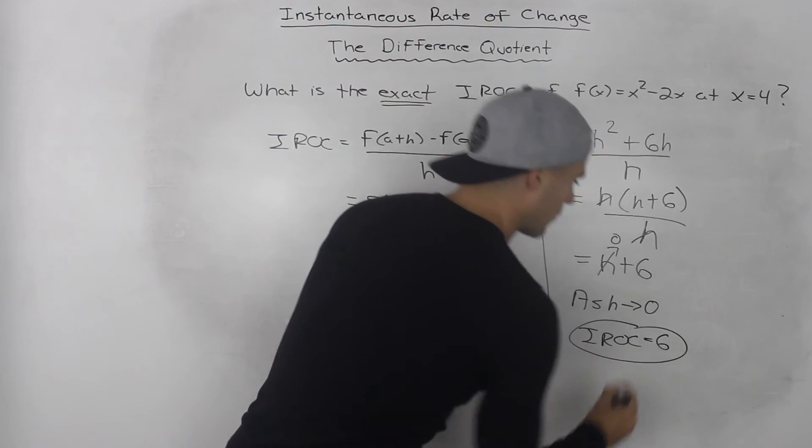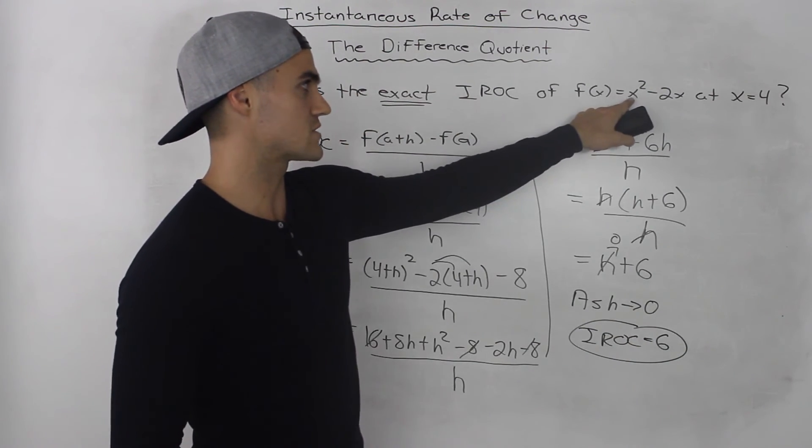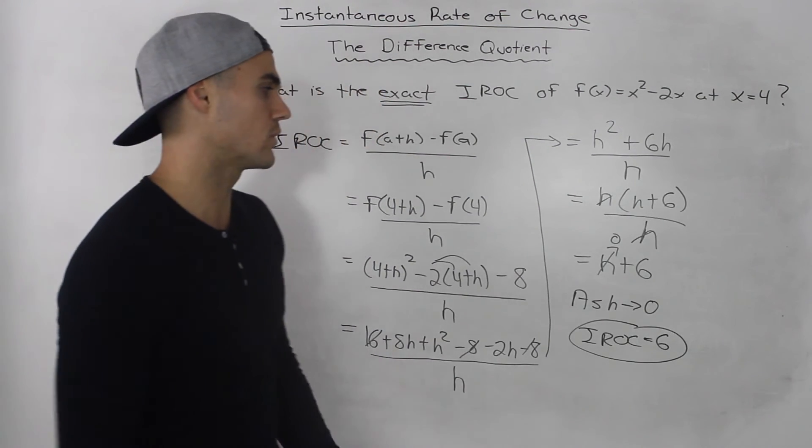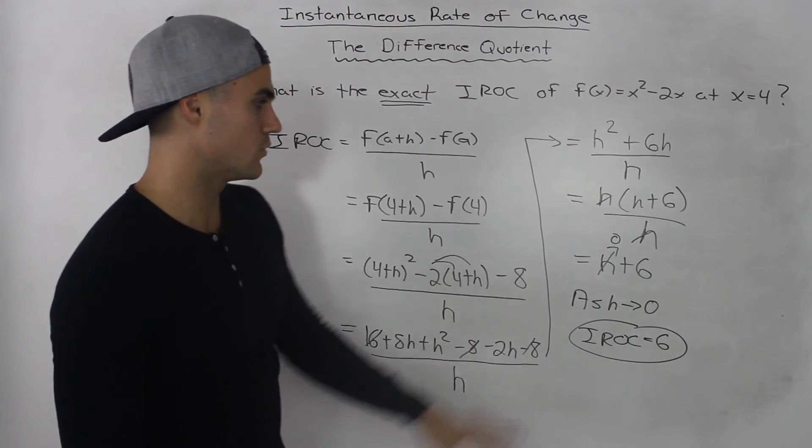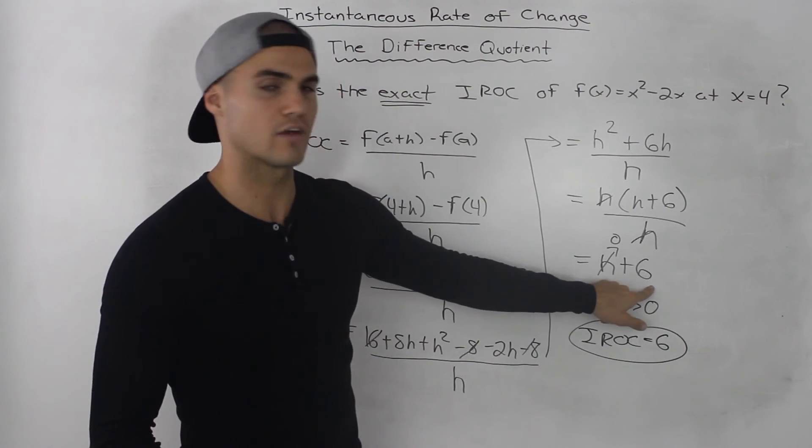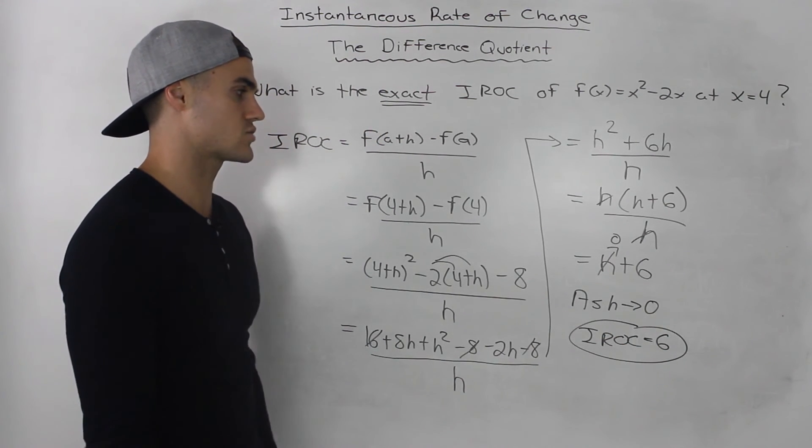So that is our exact value for the instantaneous rate of change of f of x equals x squared minus 2x at an x value of 4. We don't have to approximate it anymore. We get this general expression, plug in 0 for h, we're left with 6. So 6 is our exact instantaneous rate of change.